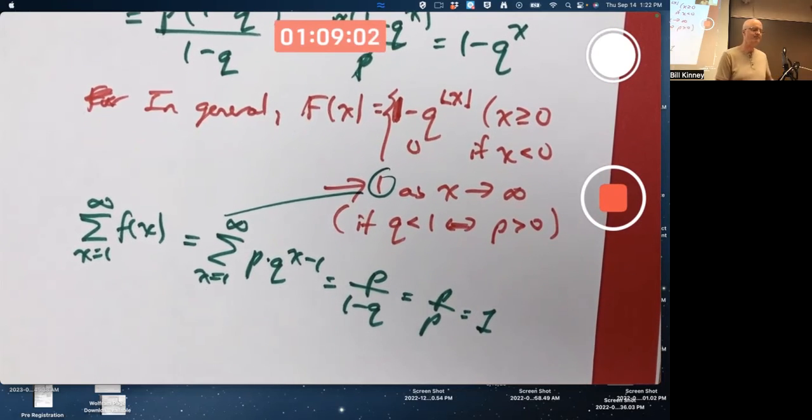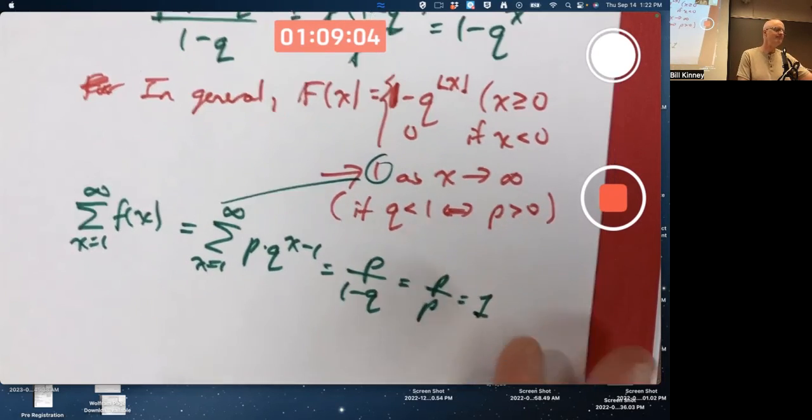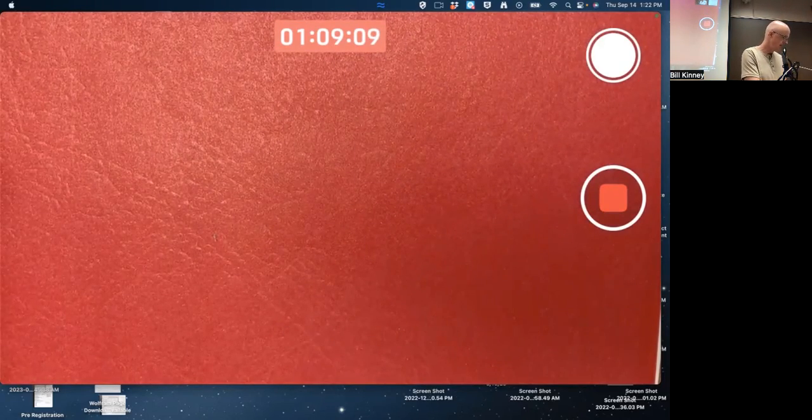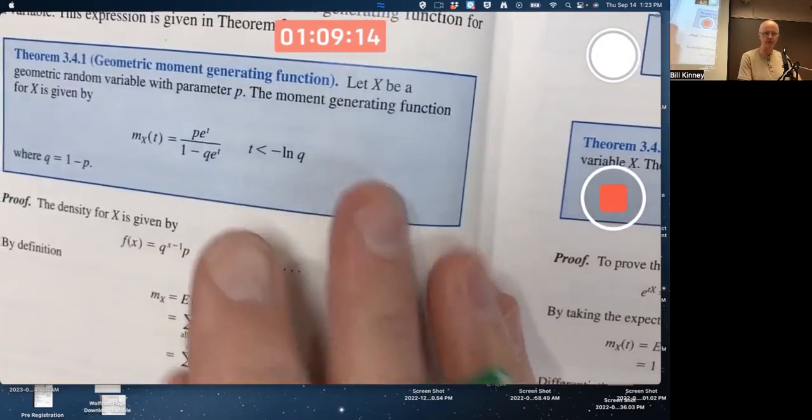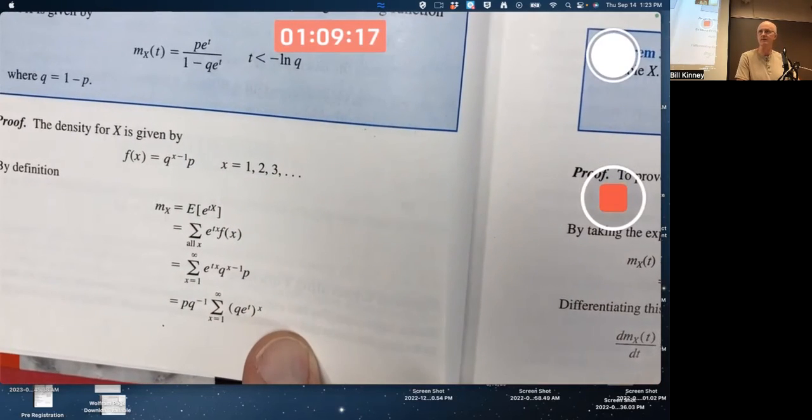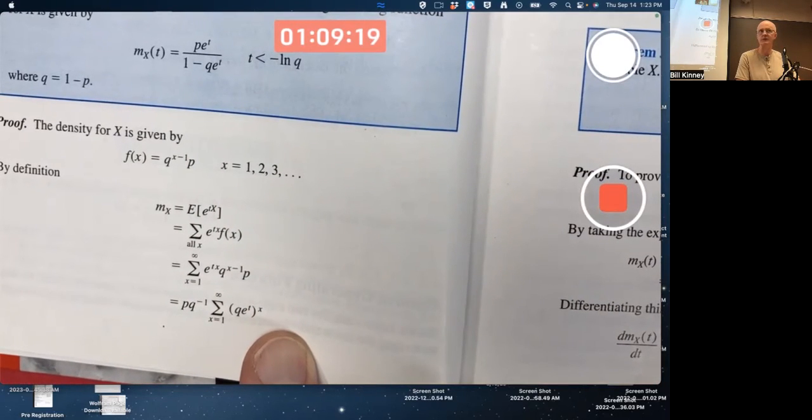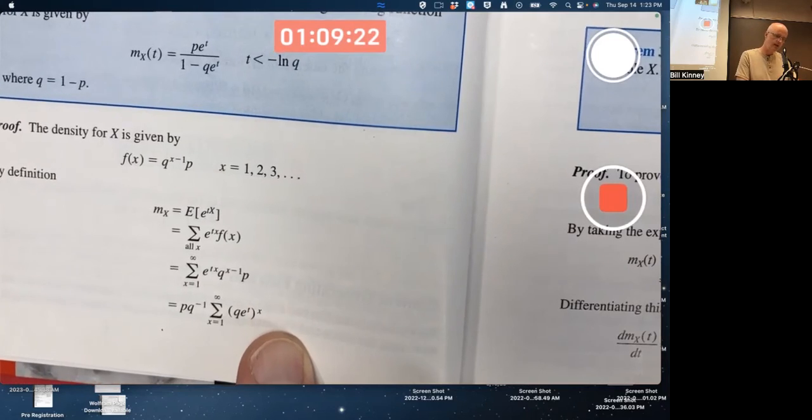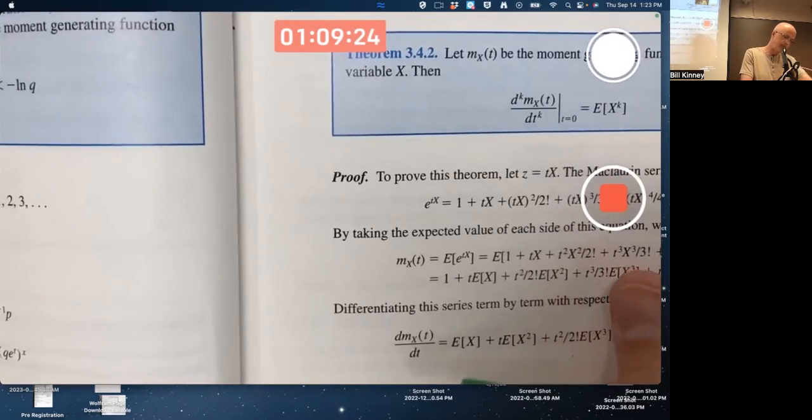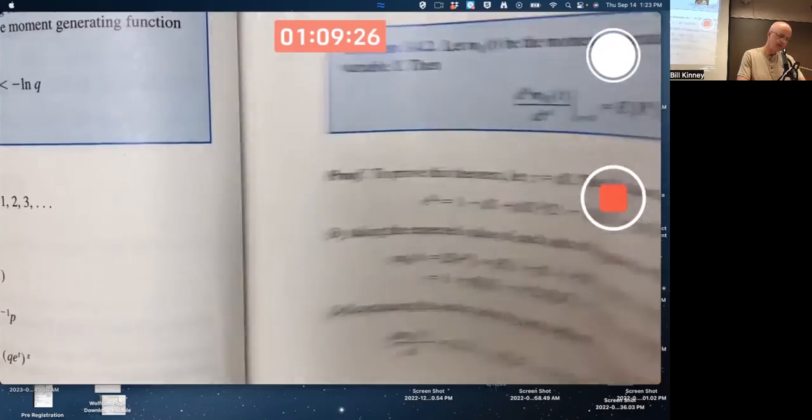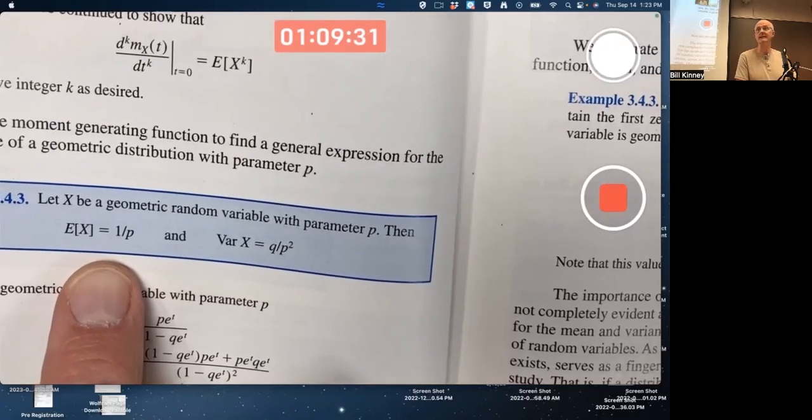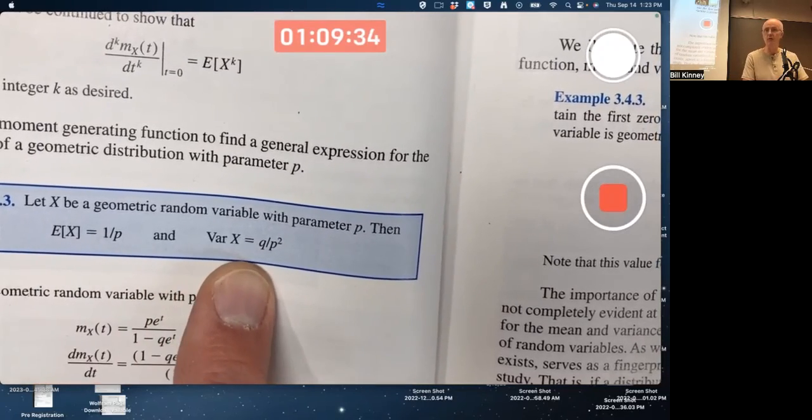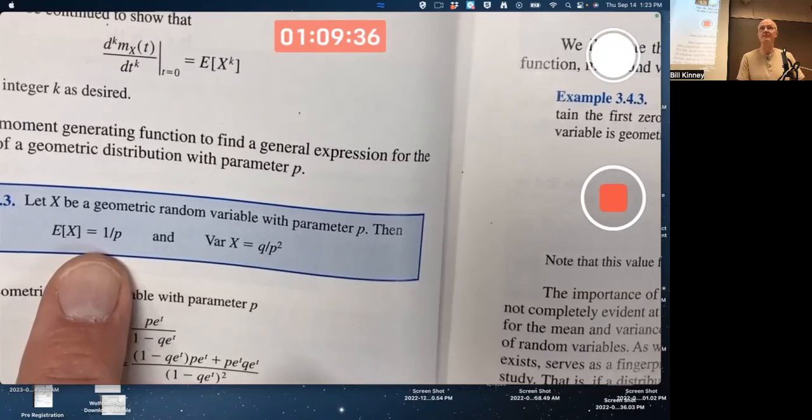Running low on time. You should make sure you understand the derivation of the various things related to geometric random variables, like the moment generating function. You should be able to follow this proof. It involves more work with geometric series. And therefore, by taking its derivatives and plugging in zero, you should be able to verify this. If X is geometric, expected value is one over P, and its variance is Q over P squared. This first one makes good intuitive sense.